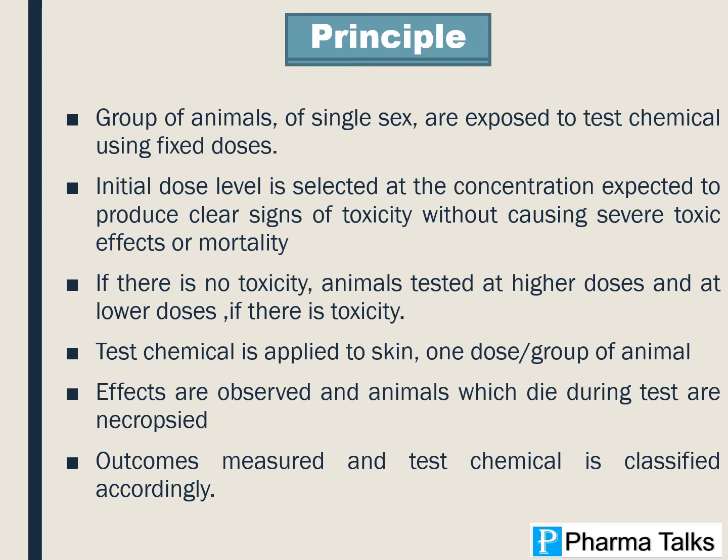The initial dose level is selected at the concentration expected to produce clear signs of toxicity without causing severe toxic effects or mortality. If there is no toxicity, animals are tested at higher doses and at lower doses. If there is toxicity, the test chemical is applied to the skin for one dose group of animals.